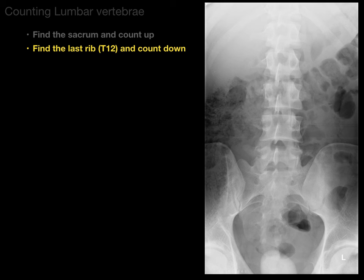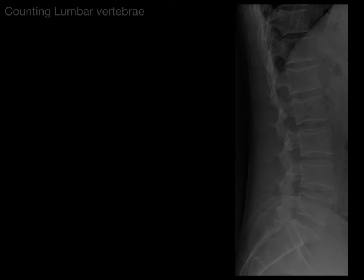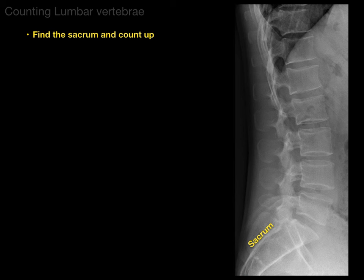The next method is to find the last rib at T12 and count down. There's that last rib — if that's the last rib, that's T12, which makes that L1, L2, L3, L4, L5, and then there's the top of the sacrum and the S1 sacral vertebra. In a lateral view, you can find the sacrum and count up as well. There's our sacrum, S1 sacral vertebra, L5, L4, L3, L2, L1, and then T12.